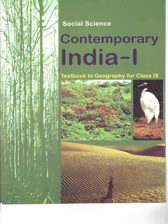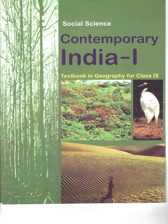The attitudinal variations are greater in the eastern half than those in the western half. The Himalaya consists of three parallel ranges in its longitudinal extent, with a number of valleys between these ranges. The northernmost range is known as the Great or Inner Himalayas or the Himadri. It is the most continuous range with an average height of 6,000 meters and contains all prominent Himalayan peaks. The folds of the Great Himalayas are asymmetrical in nature. The core of this part of Himalaya is composed of granite.